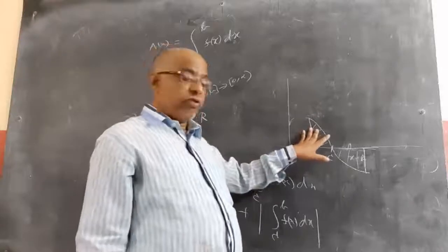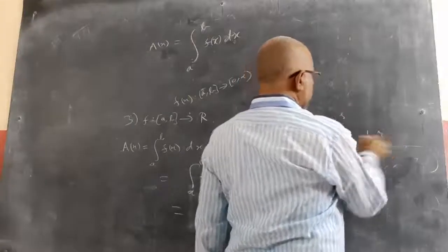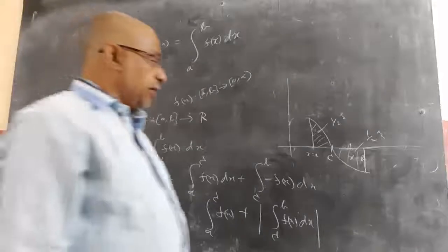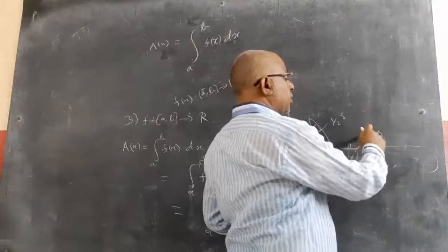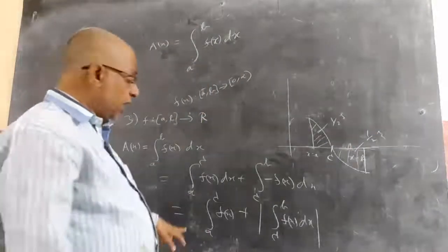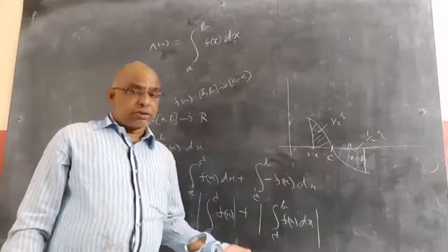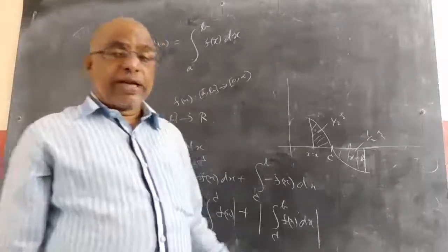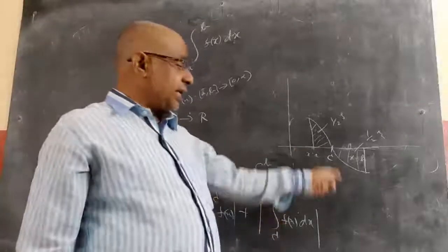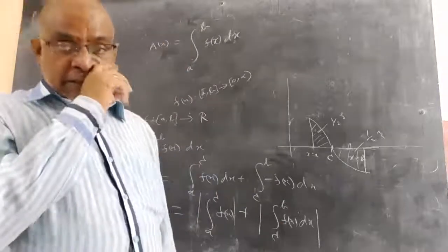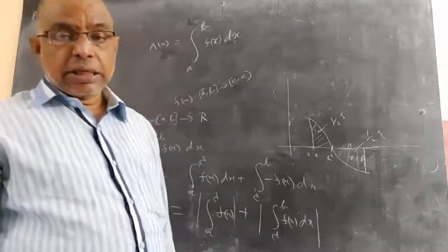For example, if this area is one half square units and this area is also one half square units, then the total area should be one unit, not zero units. If you take f(x) directly you will get minus one half — that's why you take modulus. Modulus of minus one half is plus one half; one half plus one half is one. So we can write: modulus of integral a to c f(x) dx plus modulus of integral c to b f(x) dx.